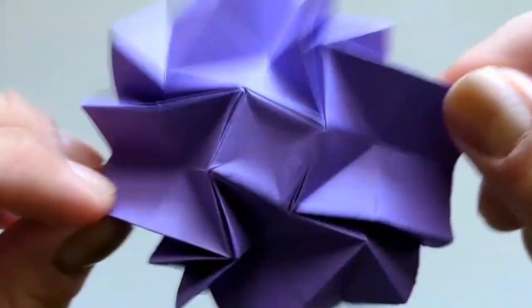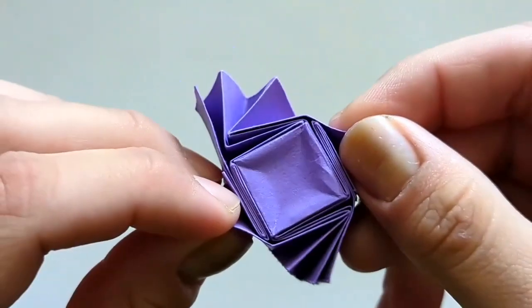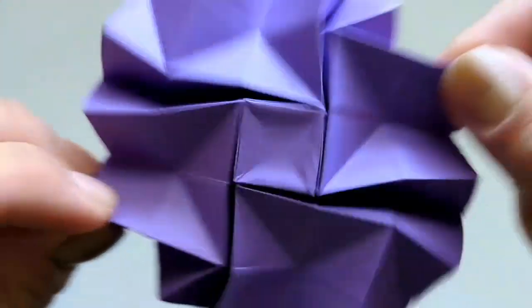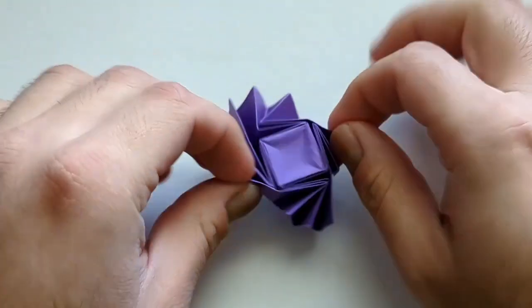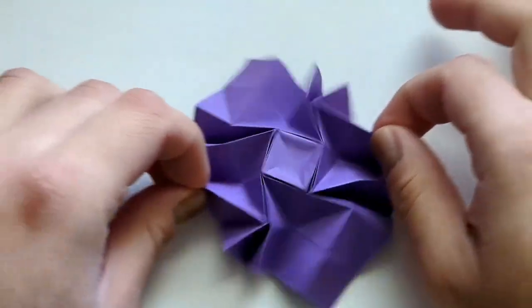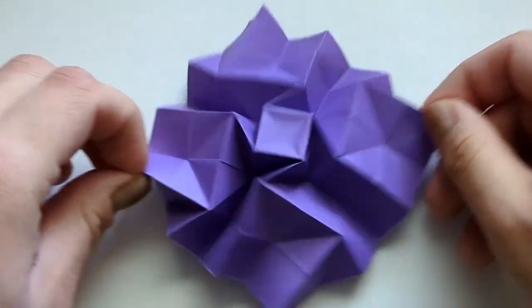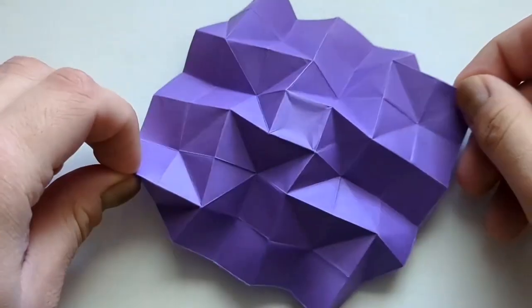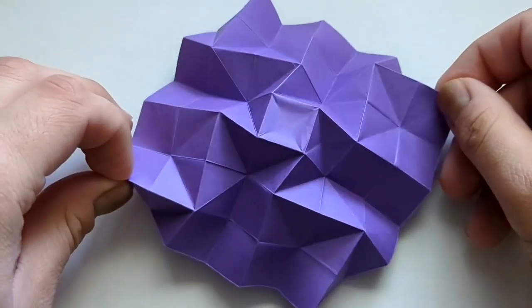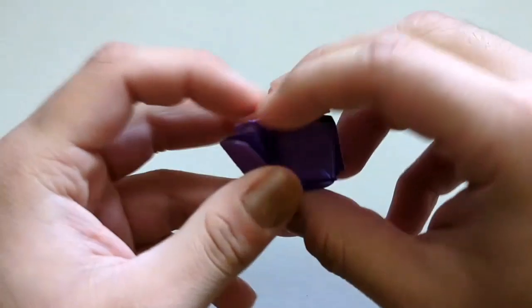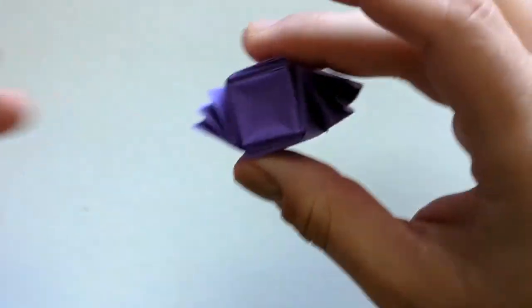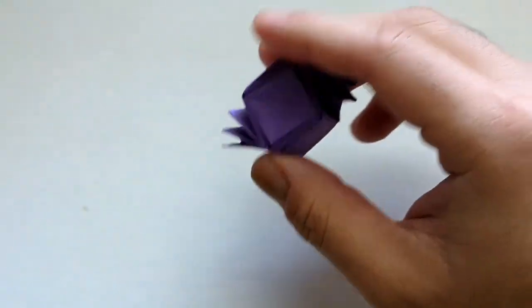So when you open and close it, you see that the center of the square kind of turns a little bit, it twists very slightly. It's a slight twist but it does twist back and forth. That's why it's oscillating, it's just twisting back and forth.